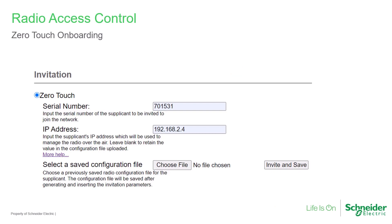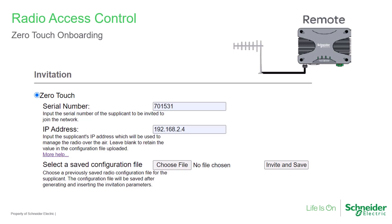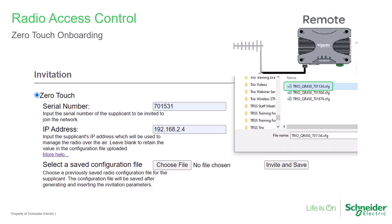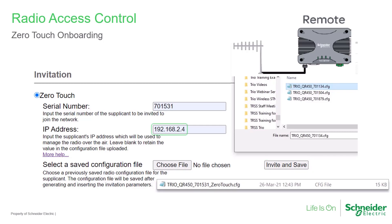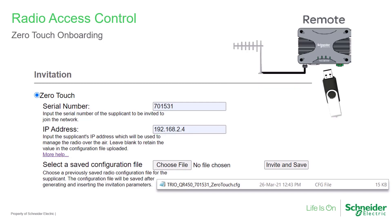Zero-touch onboarding creates an invitation that combines an OTP and a radio configuration. It is intended to be applied to radios in a factory default state, such as during installation of a new remote radio. Invitations are created on the authenticator radio. A template configuration is first created and then chosen for use in the zero-touch invitation. The user can change the template's IP address, which may be the only unique aspect of the configuration. Typically, the zero-touch invitation is automatically applied to a radio in the factory default state via an inserted USB memory or thumb drive.